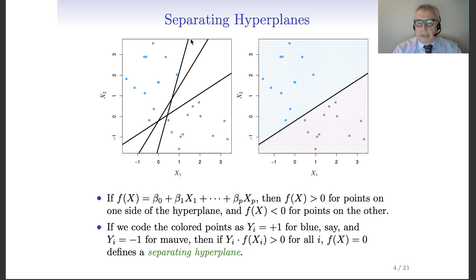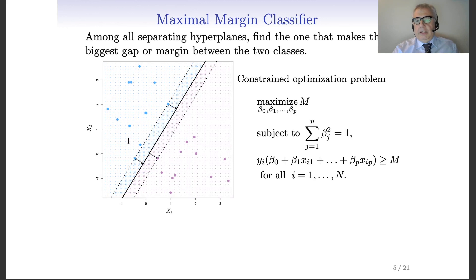Here are examples of separating hyperplanes. Looking at this, you see that finding a separating hyperplane may not suffice because we have so many choices and no clear understanding of which is best. This motivates the notion of the maximal margin classifier.